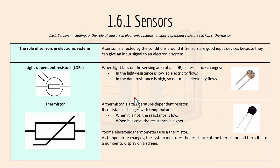We'll move on now to 1.6.1 sensors. Here are the roles of sensors in an electronic system. A sensor is affected by the conditions around it and they are good input devices because they can give an input signal to an electronic system. Light dependent resistors: when light falls on the sensing area of an LDR its resistance changes. In the light the resistance is low so electricity flows, and in the dark resistance is high so not much electricity flows.